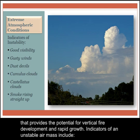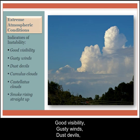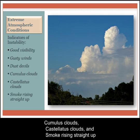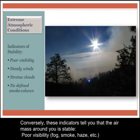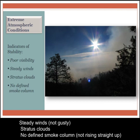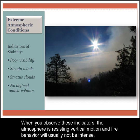When sizing up atmospheric stability, we are most concerned with an unstable air mass that provides the potential for vertical fire development and rapid growth. Indicators of an unstable air mass include good visibility, gusty winds, dust devils, cumulus clouds, castellatus clouds, and smoke rising straight up. When you observe these indicators, a fire will have the potential to develop in the vertical direction and grow rapidly. Conversely, indicators of a stable air mass include poor visibility, fog, smoke, haze, steady winds, stratus clouds, and no defined smoke column. When you observe these indicators, the atmosphere is resisting vertical motion and fire behavior will usually not be intense.